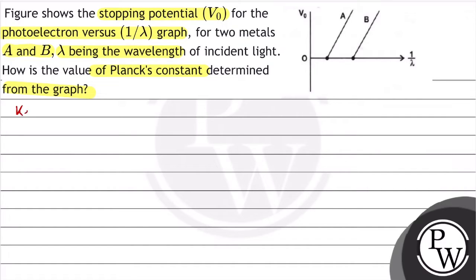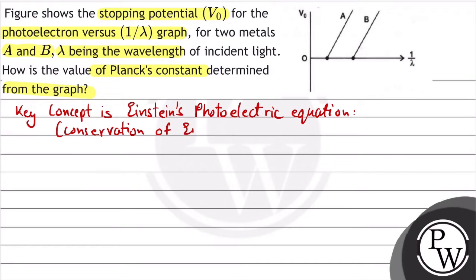So the key concept here is Einstein's photoelectric equation, which is based on conservation of energy. The equation states that maximum kinetic energy of photoelectron is equal to energy of photon minus the work function of metal.